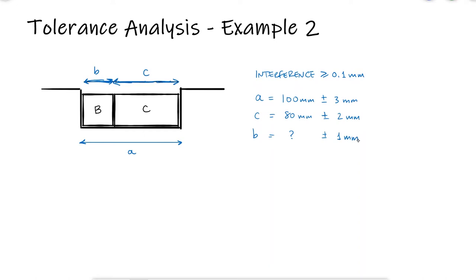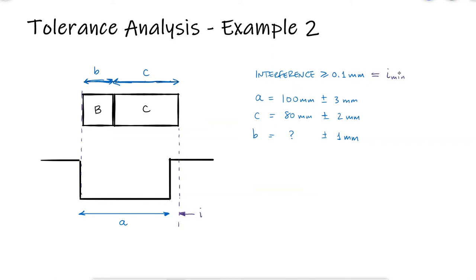This is the second example for the tolerance analysis video. The links to the main video and example 1 are in the description below. The difference here with respect to the previous example is that the dimensions of the parts that go inside the hole are greater than the dimension of the hole, and that's why we have interference instead of a clearance.